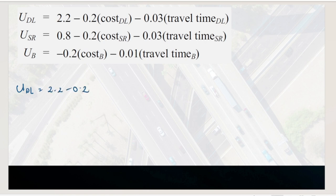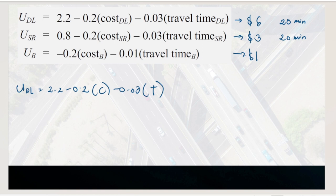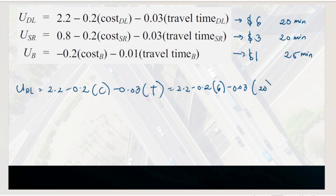For drive alone, cost is $6 and travel time is 20 minutes. For shared ride, the cost is $3 — because it's shared equally — and the travel time is also 20 minutes. For bus, cost is $1 and travel time is 25 minutes. Computing the utility function for drive alone: U_DL = 2.2 − 0.2(6) − 0.03(20) = 0.4.